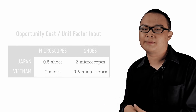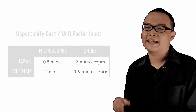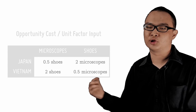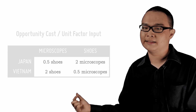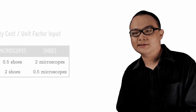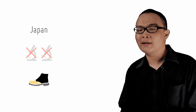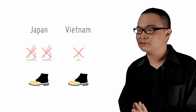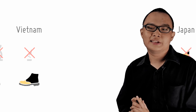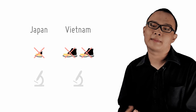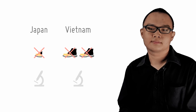Here we see that Japan has the absolute advantage in both goods. However, Vietnam enjoys the comparative advantage in making shoes. While Japan has to sacrifice two microscopes to make one pair of shoes, Vietnam only has to sacrifice half a microscope. Japan, however, has the comparative advantage in microscopes.